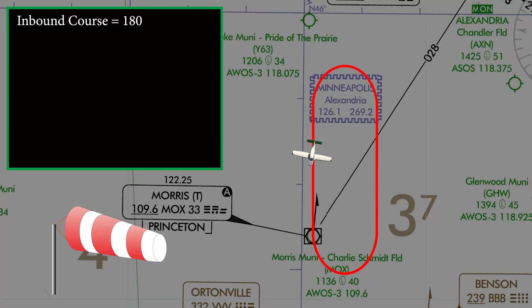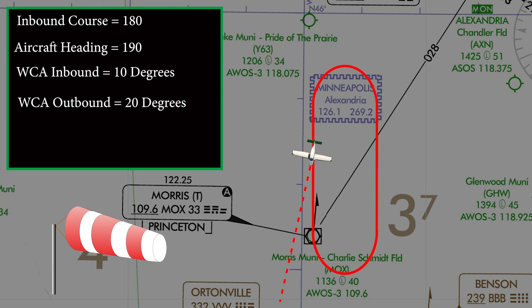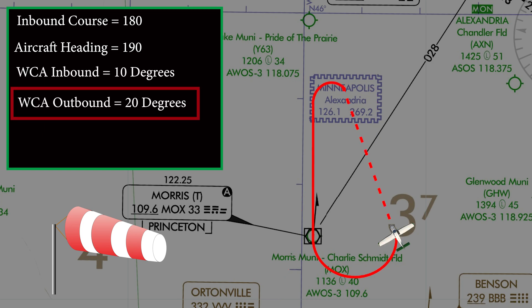Using the same scenario we previously used for time holding — the inbound course is 180 and we are flying a heading of 190, giving us 10 degrees of wind correction to the right — by multiplying 10 degrees of wind correction by 2 for the distance hold, we now have a new outbound heading of 340. This will accommodate the longer outbound leg, so that we will still end up with the same standard rate turn on the inbound leg.